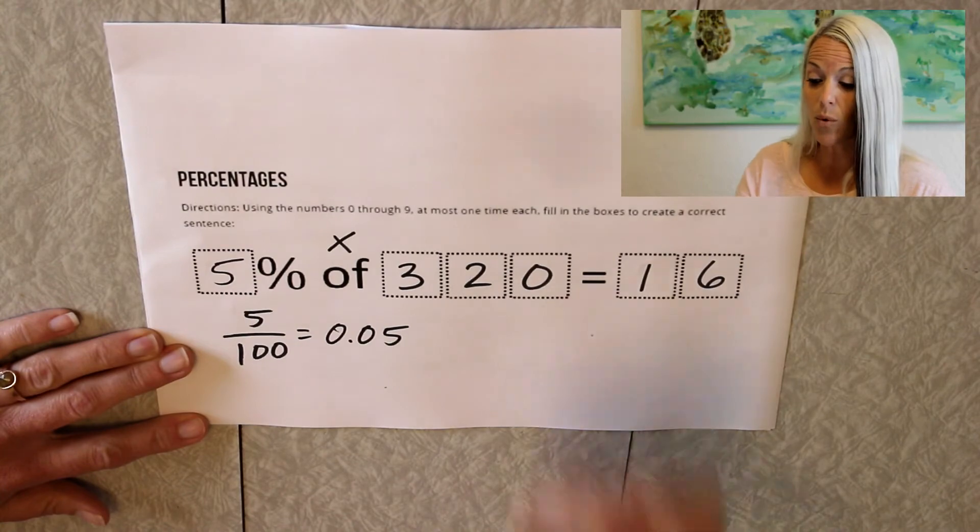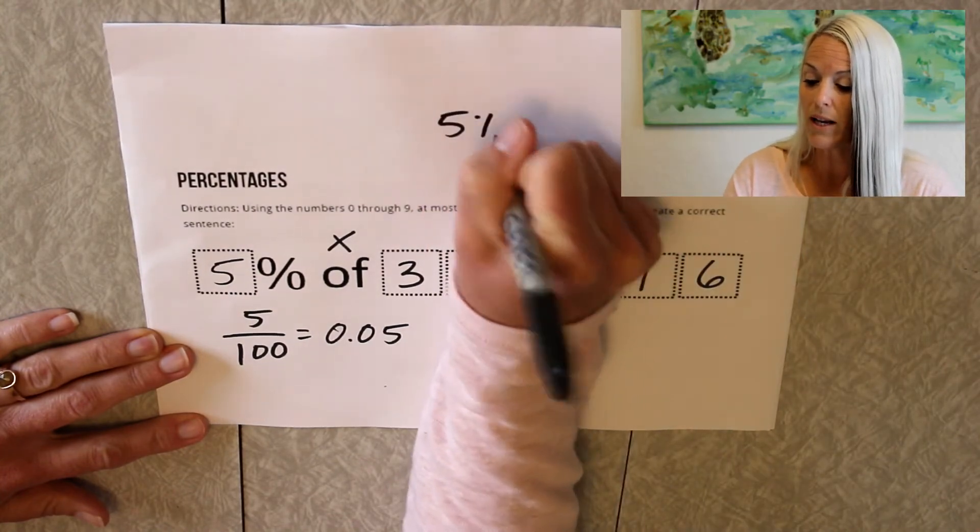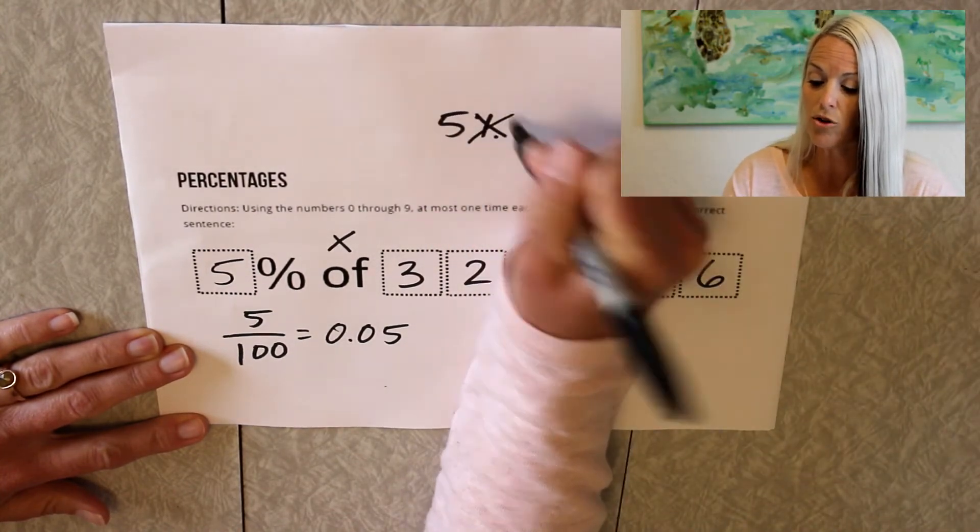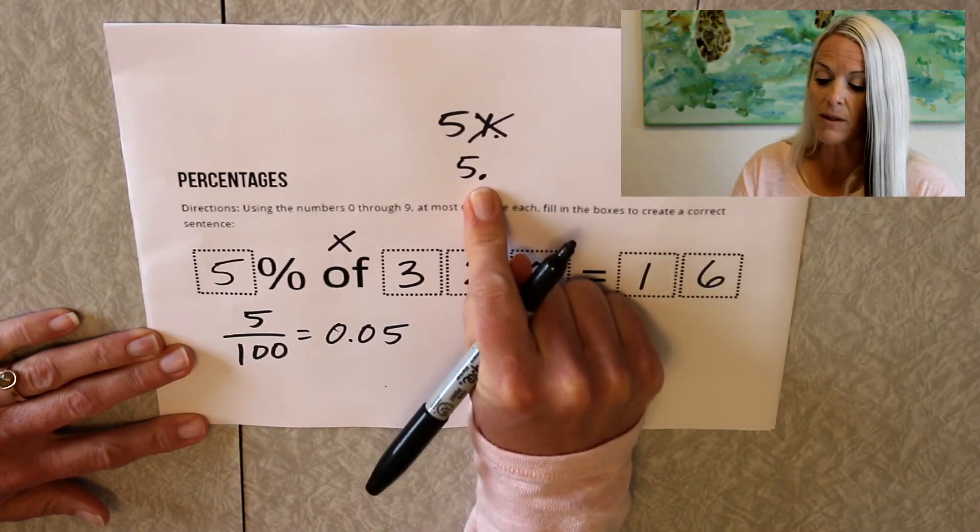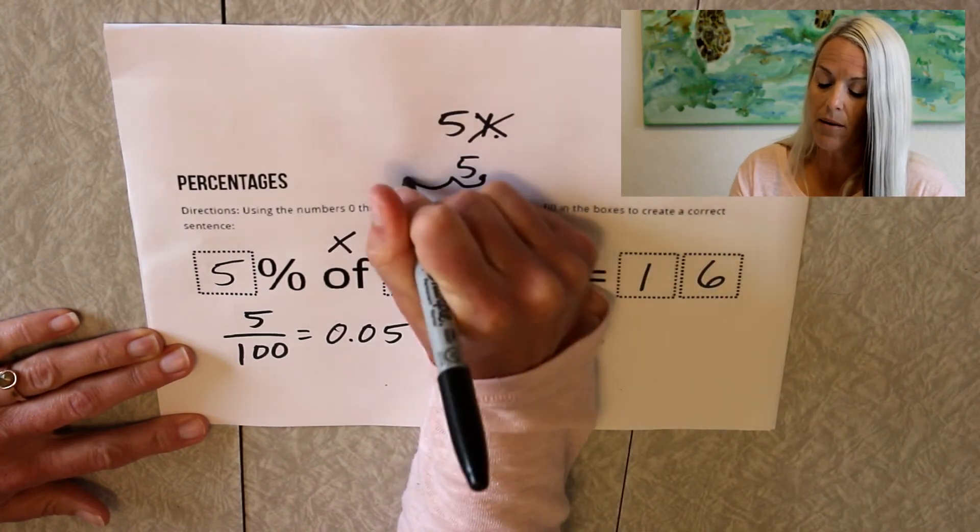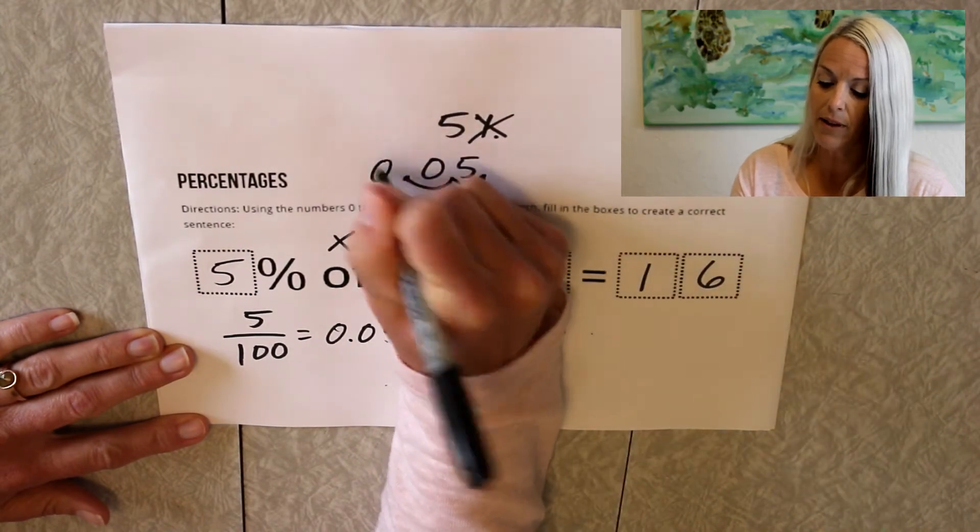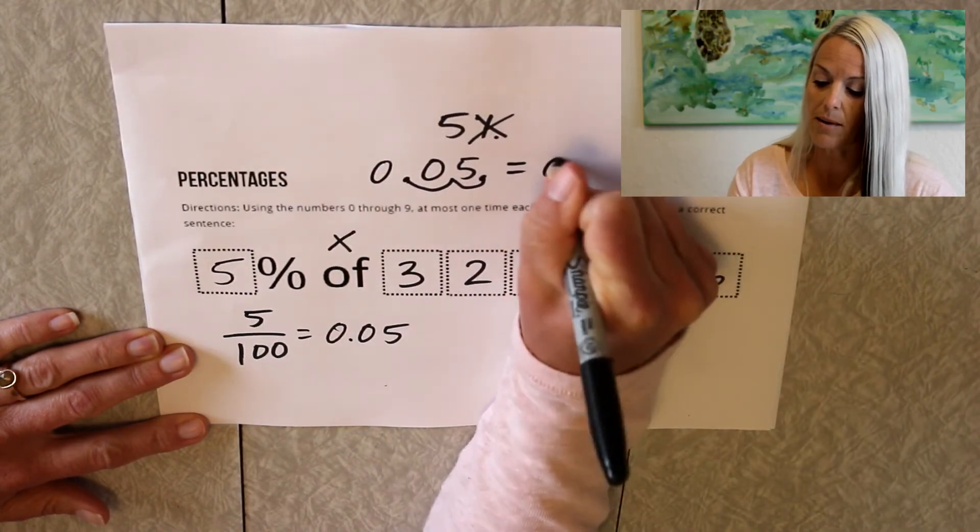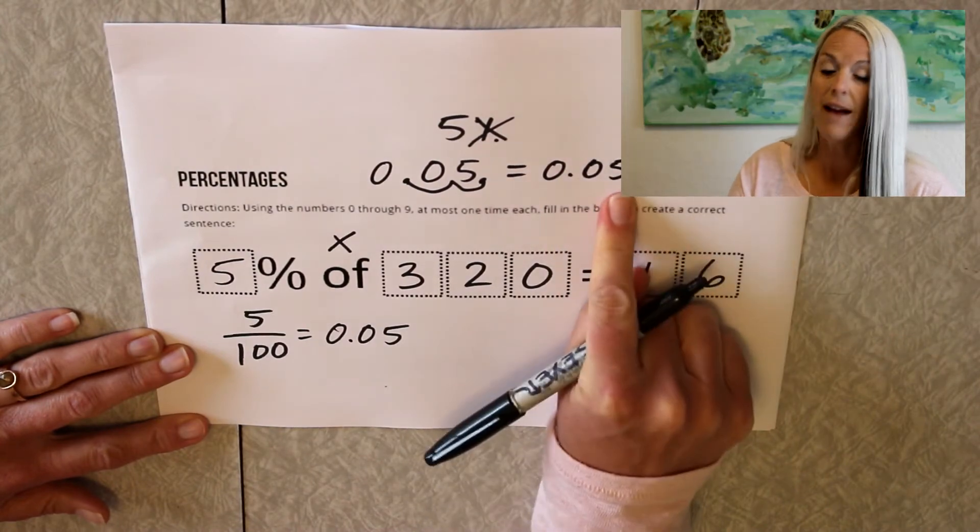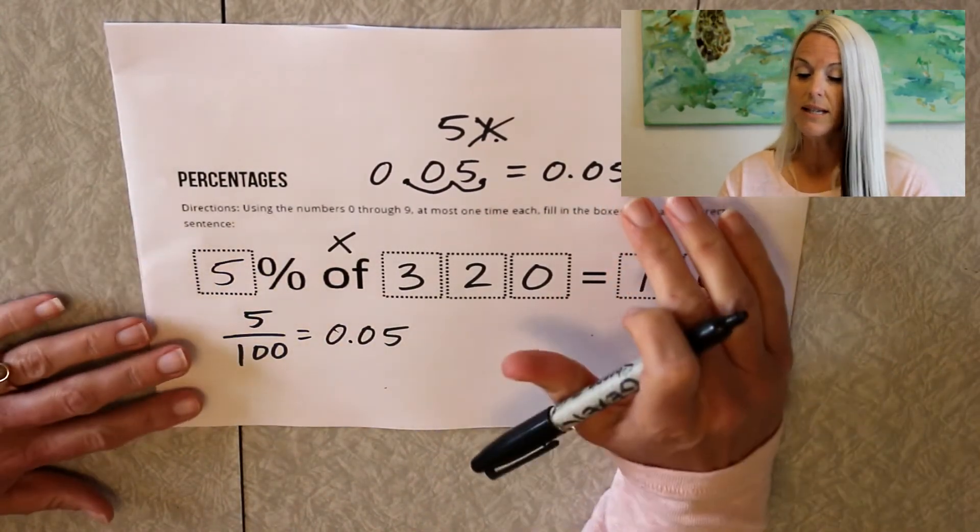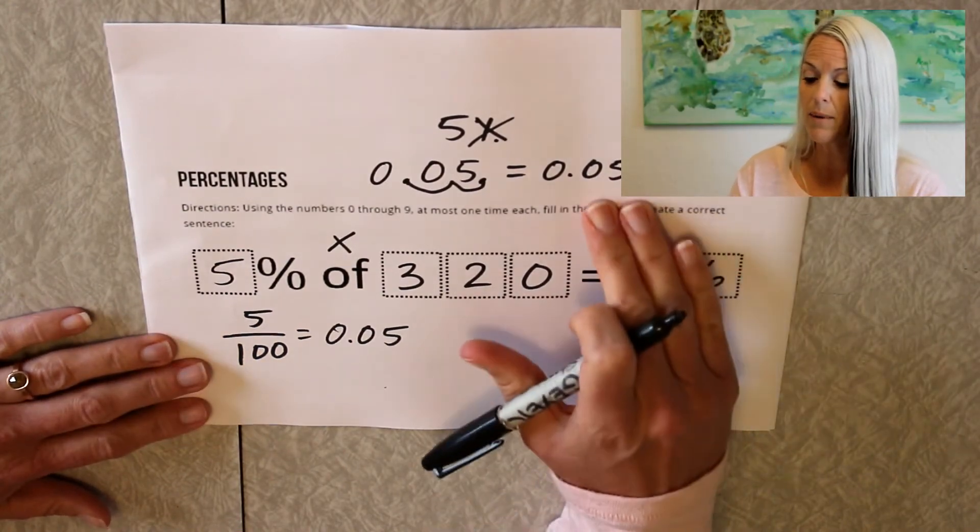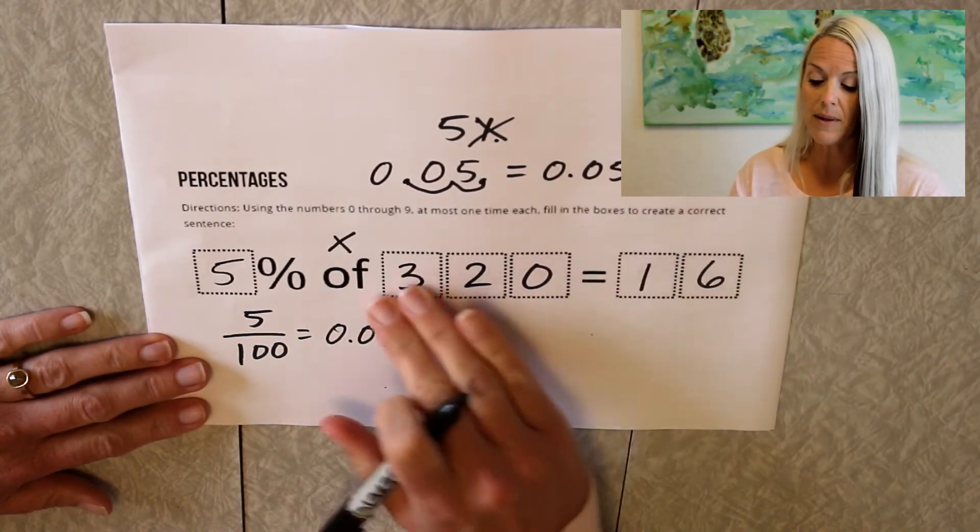And the way that looks as a decimal is putting the five in the hundredths place. So 5 hundredths. So you can think of it that way, or you can think of it simply as when you have a percent, you're simply going to drop that percent sign. Picture that invisible decimal right there. Move it to the left twice, and fill in your zeros. So that becomes 5 hundredths. So either way, we get 5% is 5 hundredths. So now we're going to multiply 5 hundredths by 320.